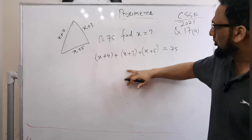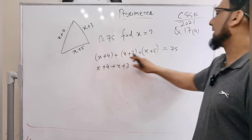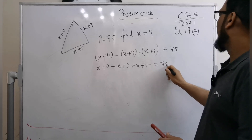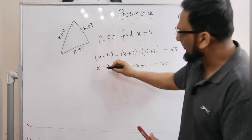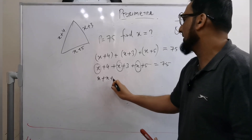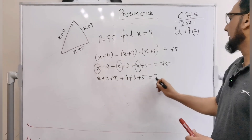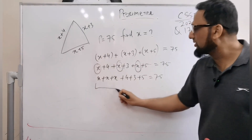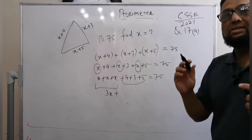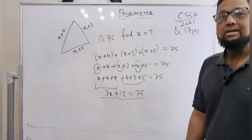Opening the brackets: x plus 4 plus x plus 3 plus x plus 5 equals 75. Now I rearrange by grouping the x terms together: x plus x plus x gives three x. Then 4 plus 3 plus 5: four plus three is seven, seven plus five is twelve. So we get 3x plus 12 equals 75.